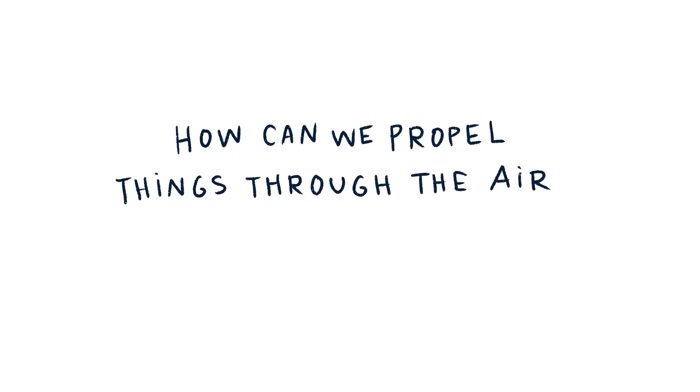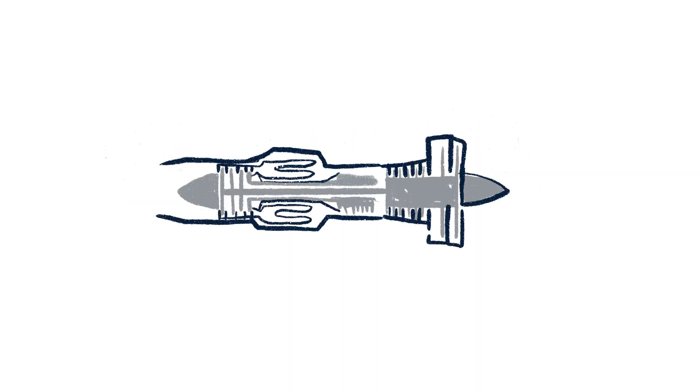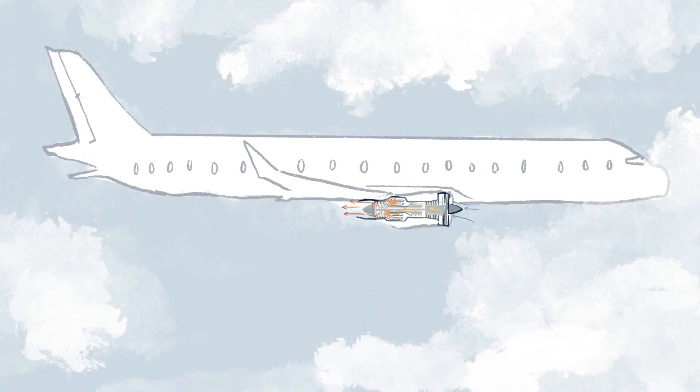How can we propel things through the air? Propulsion engineers design air-breathing engines for planes that scoop air in the front, then heat, compress, and push the air out the back. That's what moves the plane forward.